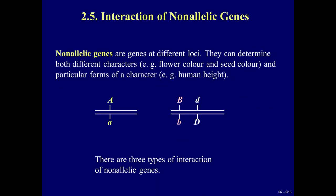Interaction of non-allelic genes. Non-allelic genes are genes at different loci. They can determine both different characters — for example, flower color and seed color — and particular forms of a character, such as human height. In our picture, genes A and B are non-allelic because they are located on different chromosomes. Genes B and D are also non-allelic because they are located at different loci of the same chromosome.